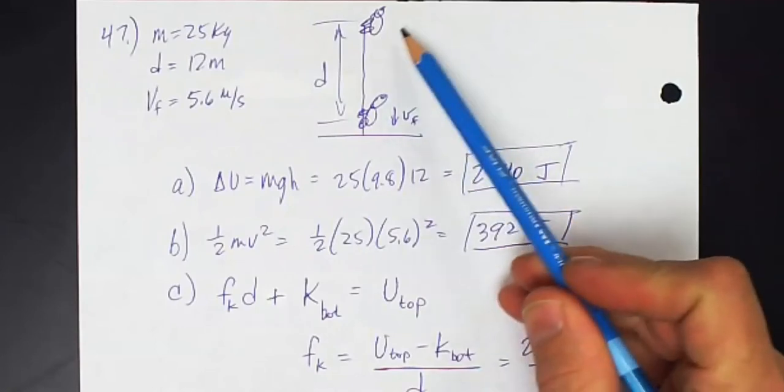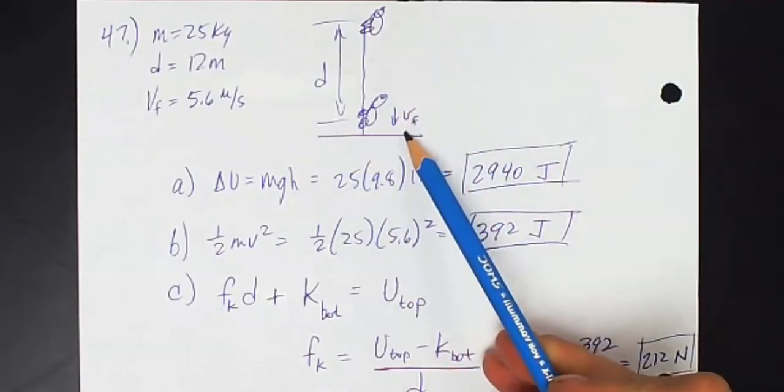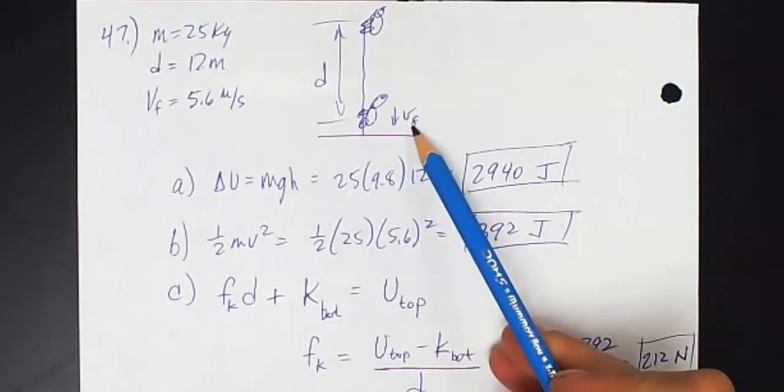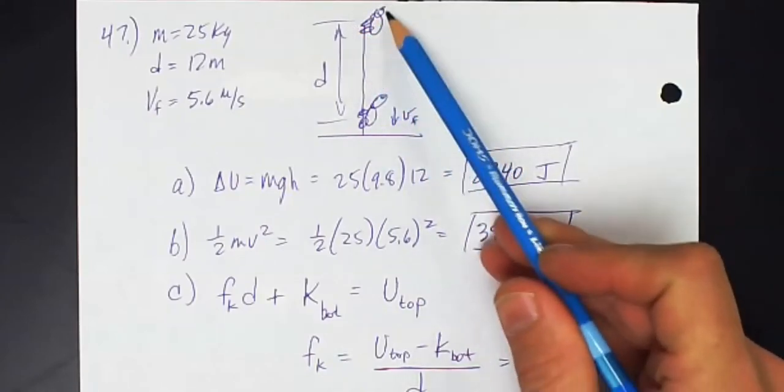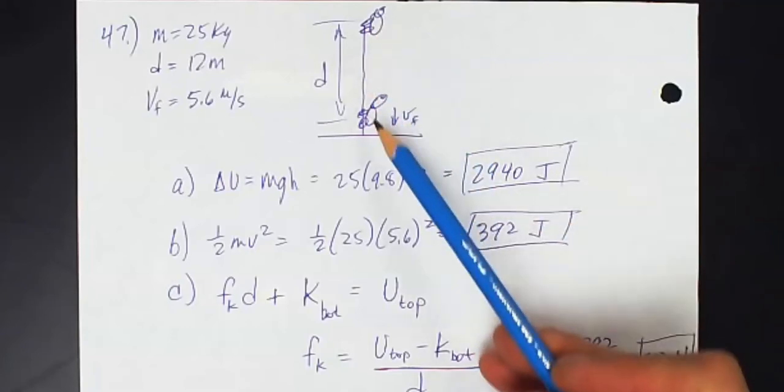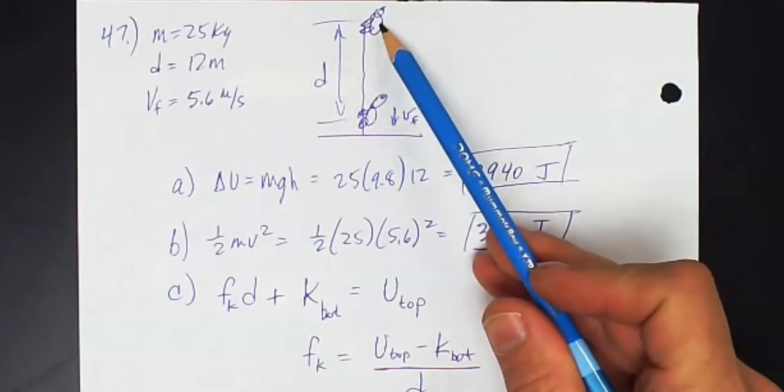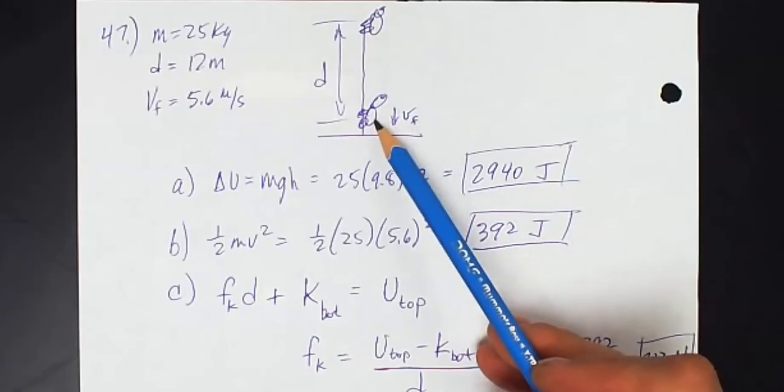Here's my diagram. If I choose the very bottom to be my height of zero, I can say that the bear starts off with only gravitational potential energy, and then when it gets to the bottom, all of that gravitational potential energy has become kinetic energy and thermal energy.